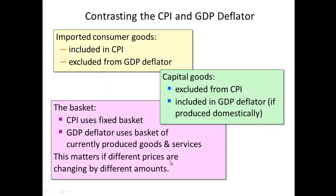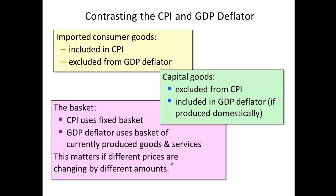Now let's look at the difference between CPI and the GDP deflator. The GDP deflator was from our previous chapter — Chapter 10 — where we discussed how it deflates GDP so we have a sense of real value. Now we're going to look at what the difference is between CPI, the consumer price index, and the GDP deflator.